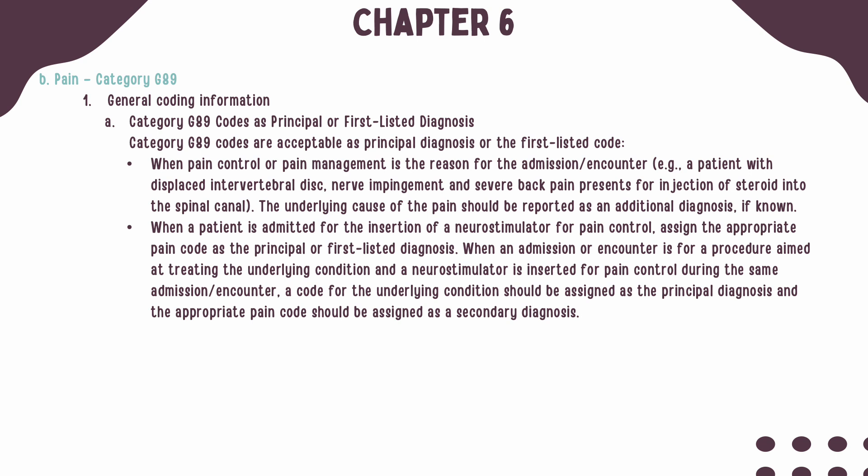When the patient is admitted for the insertion of a neurostimulator for pain control, the appropriate pain control code should be listed first. When the admission or encounter is for a procedure aimed at treating the underlying condition and a neurostimulator is inserted for pain control during that same admission or encounter, then a code for the underlying condition should be sequenced first, followed by the appropriate pain code from Category G89.